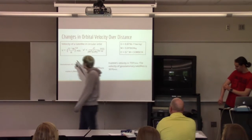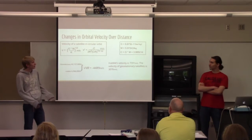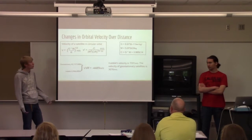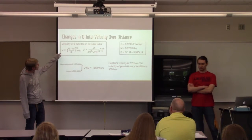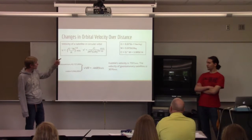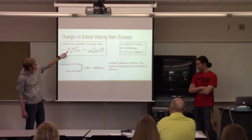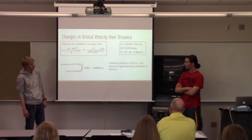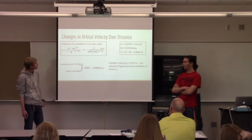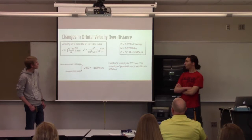So here we have the velocity of any satellite — doesn't matter what the mass of the satellite itself is. It could be an artificial satellite or it could be a moon. The velocity depends on the mass of the central body and then the radius. This g here is the universal gravitation constant, which is like the strength of gravity. If you multiply that by the mass and divide by the radius, you get the velocity after taking the square root.